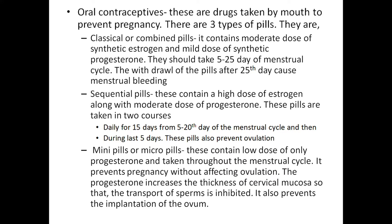Oral contraceptives are drugs taken by mouth to prevent pregnancy. There are three types of pills. The first are combined or classical pills, which contain a moderate dose of synthetic estrogen and a mild dose of synthetic progestogen. They should be taken from the 5th to 25th day of the menstrual cycle. Withdrawal of the pills after the 25th day causes menstrual bleeding.